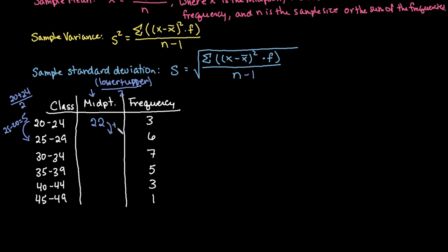So for my next value, I could add my 5, and it would be 27, and then my next one would be 32, 37, 42, and the last one would be 47.